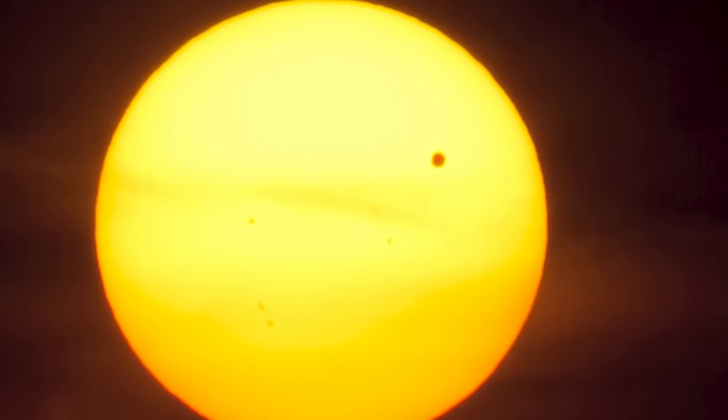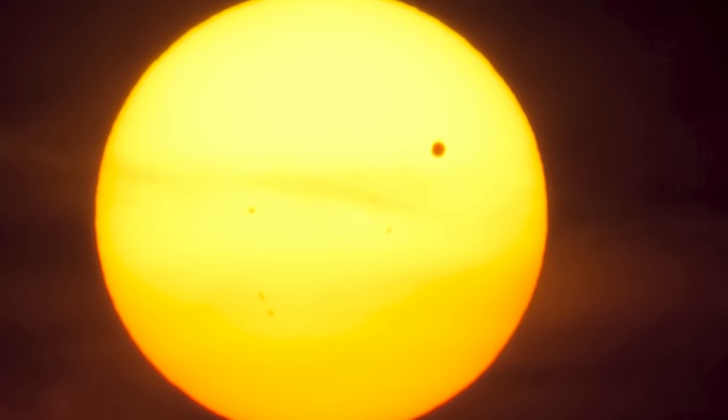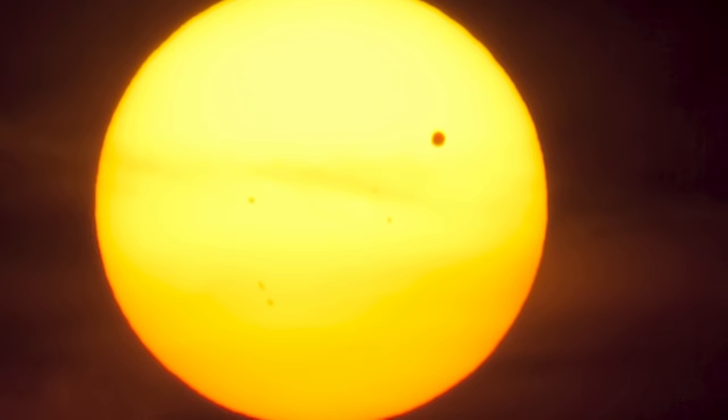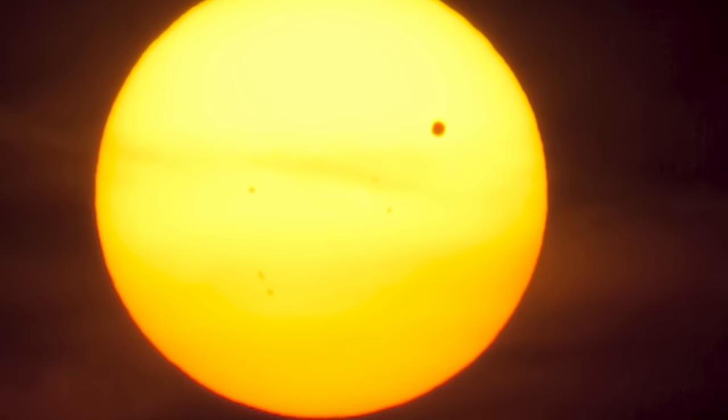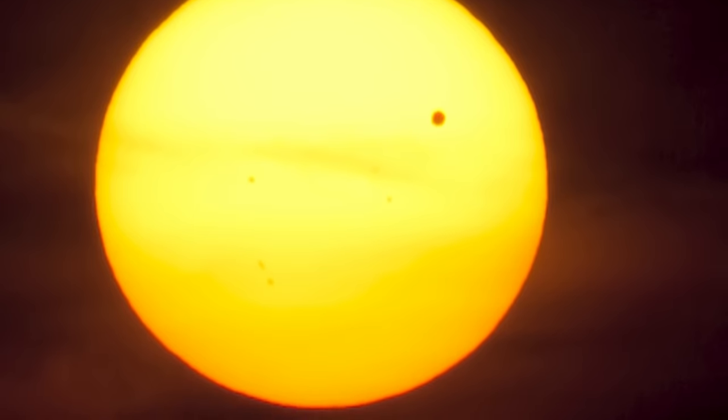Because of its retrograde rotation, the Sun would appear as a hazy yellow light as it rises in the west. A year and a day on Venus take 243 and 117 Earth days respectively, and at night settlers would experience a pitch black environment.